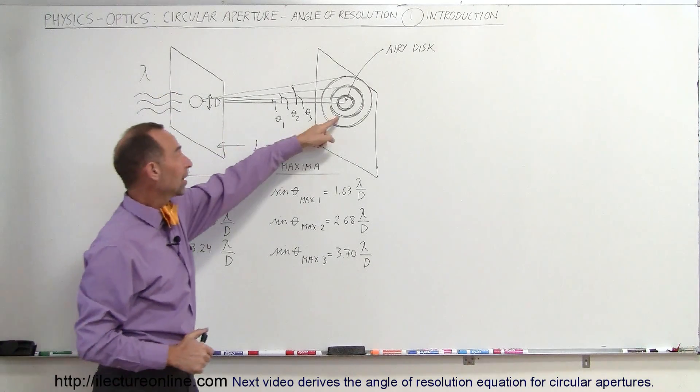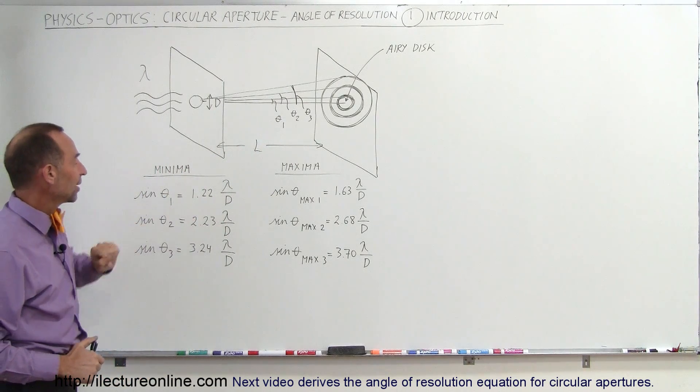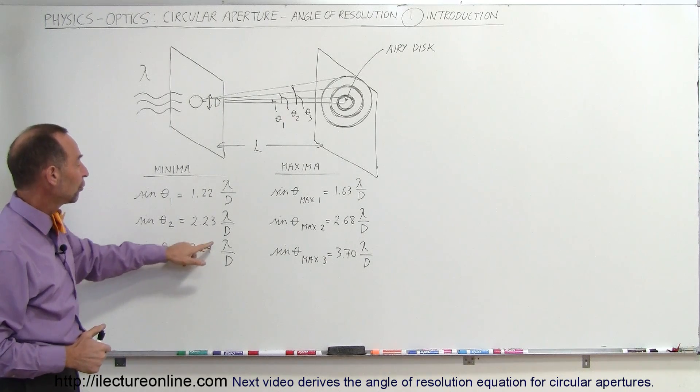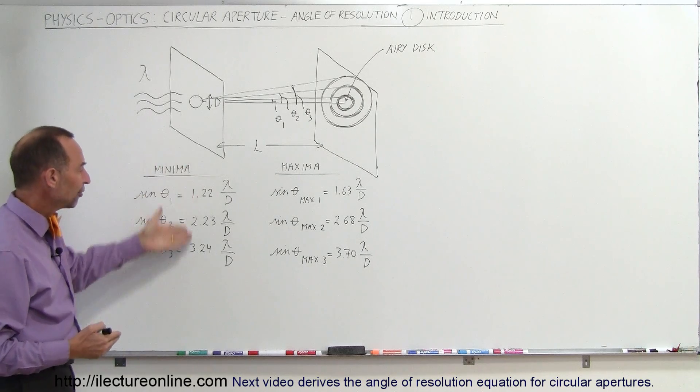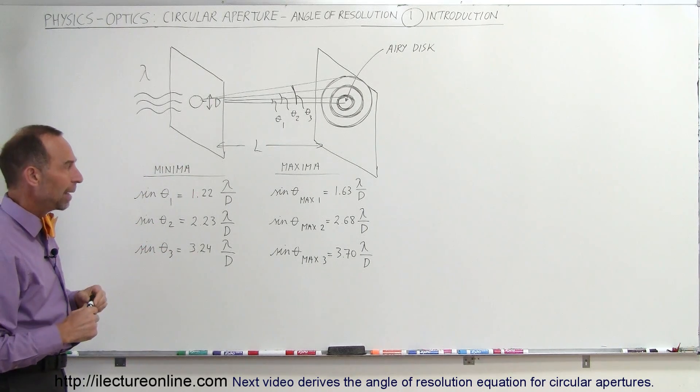For the second minimum right there, the sine of that angle is equal to 2.23 times the wavelength divided by D, and the sine of the third angle theta sub 3 is 3.24 lambda divided by D. And where these come from is from the solutions of the Bessel function that describes those particular patterns.